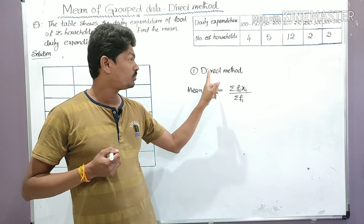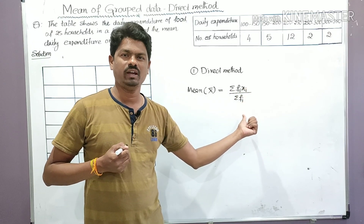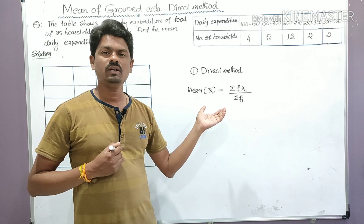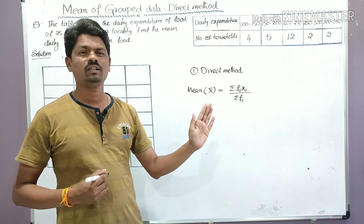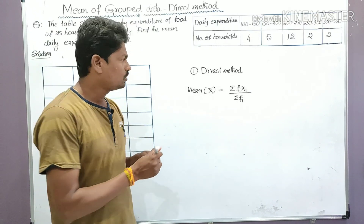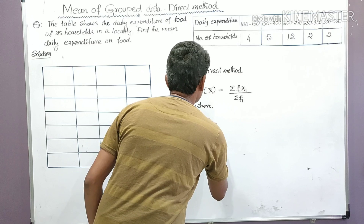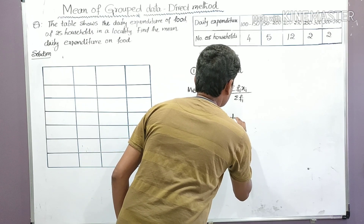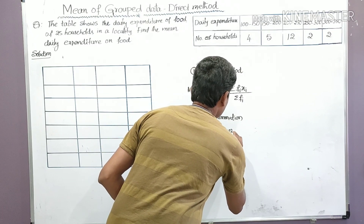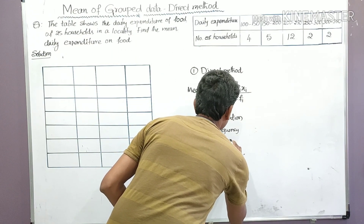You have to remember this formula. Sometimes the examiner asks for two marks: 'Write the formula to find the mean of grouped data using the direct method and explain each term involved in it.' The formula is: mean x̄ = Σfᵢxᵢ ÷ Σfᵢ, where Σ (sigma) means summation, fᵢ is the frequency of class i, and xᵢ is the class mark.